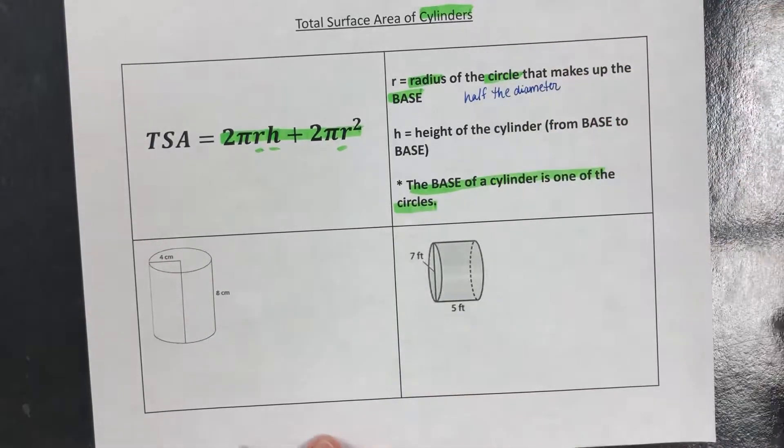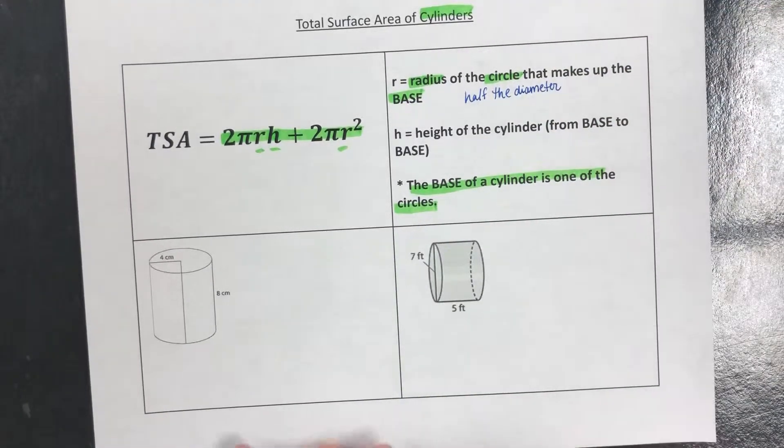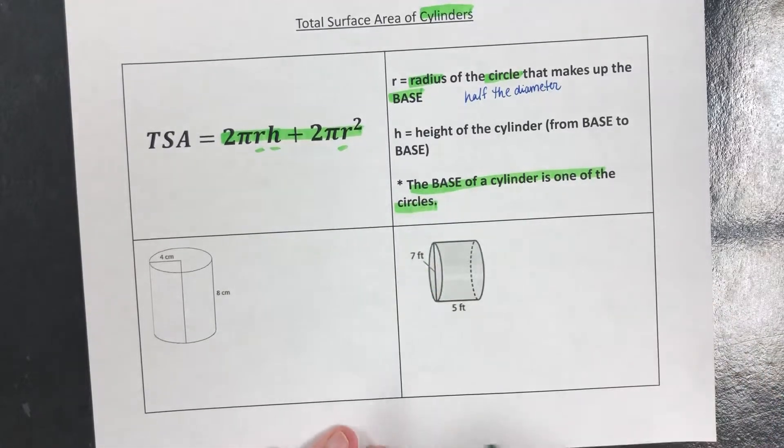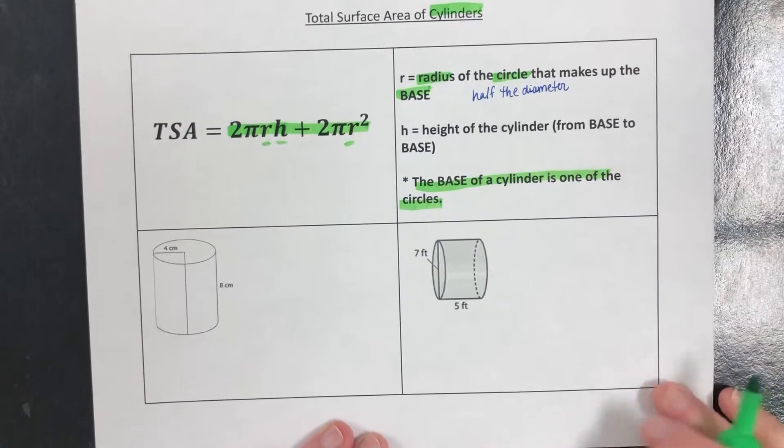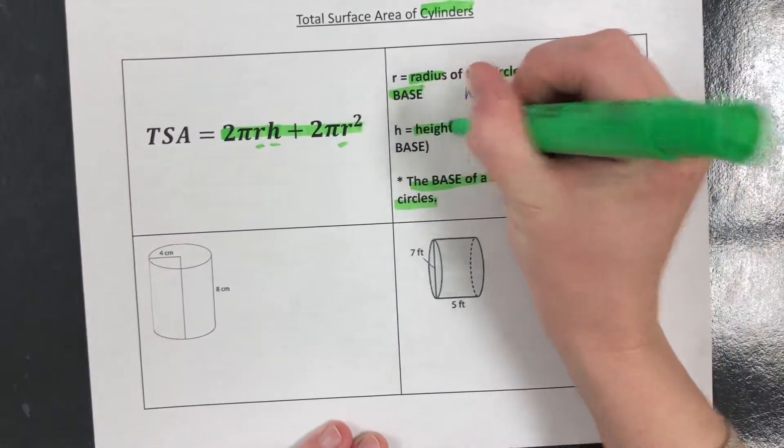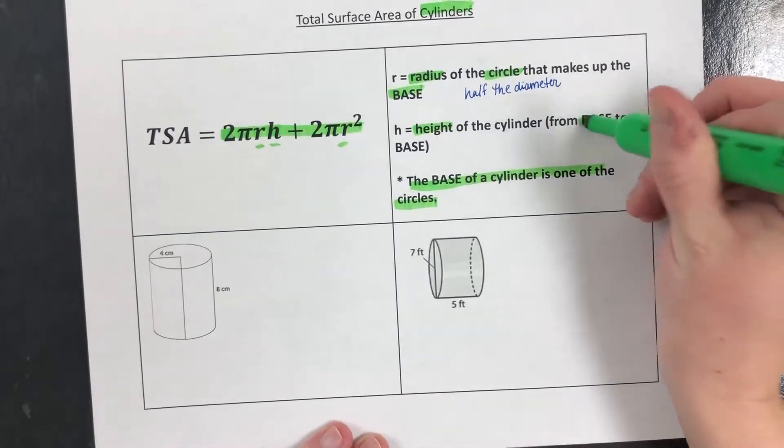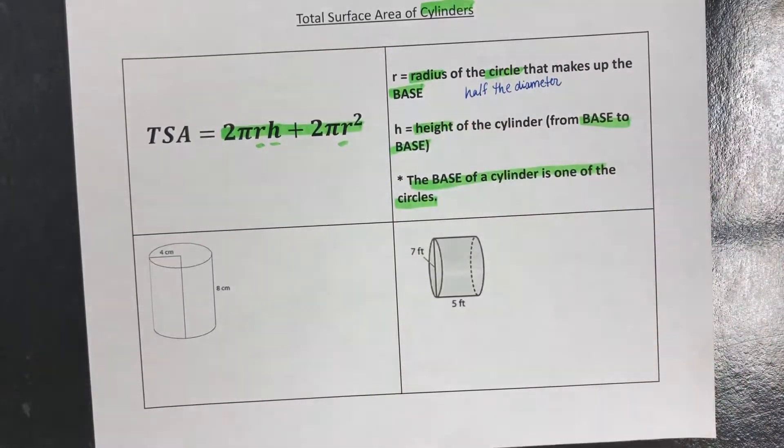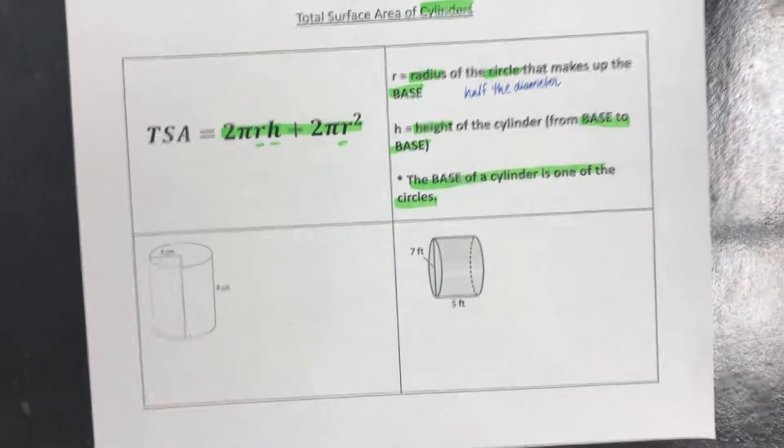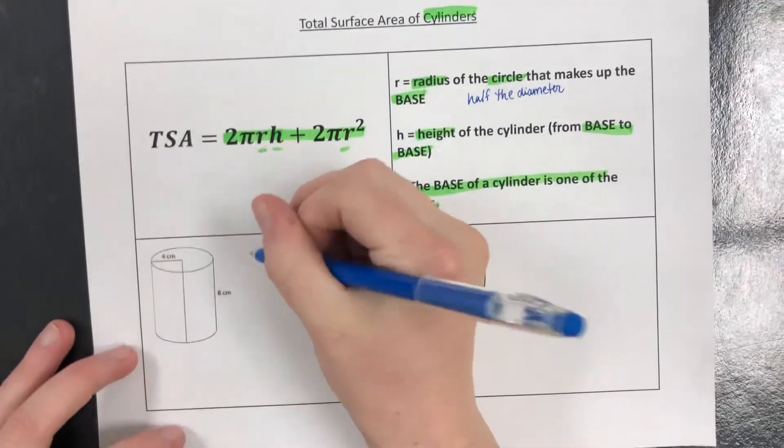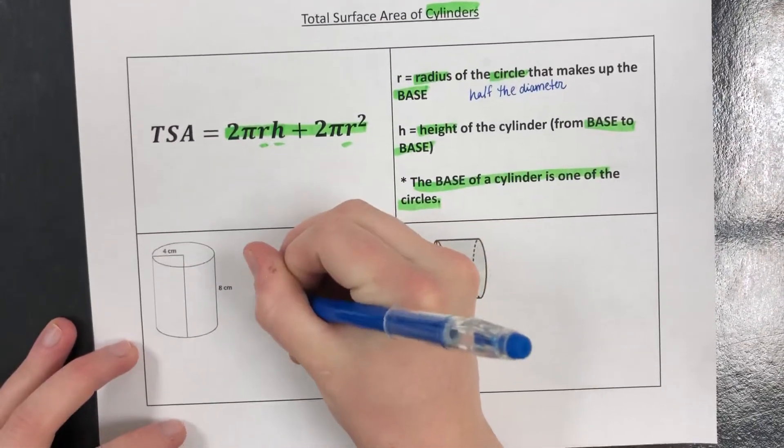So if they give you the diameter of the circle from one side to the other, you would have to divide that by two to get the radius. h, just like it has been on all of these formulas, is the height. In this case, it's the height of the cylinder from base to base, so from circle to circle. When we're looking at these cylinders, two things you need: you need the radius and you need the height.